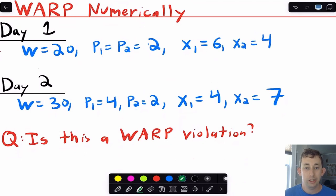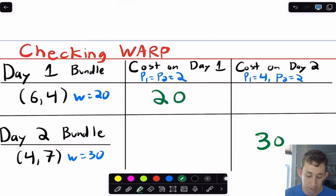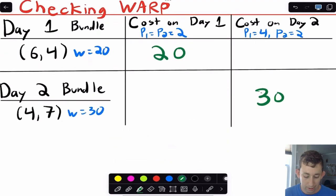So we're going to do the same thing that we just did graphically, we're just going to do it with math and with numbers. So what we're going to do is we're going to say, well, on day one, the cost of my bundle that I got on day one was 20 bucks. And if I were to compute the cost of that on day two, where the price of one is four and the price of two is two, then I'm going to be spending $32 because that's going to be four times six is 24 plus two times four is eight. So that's $32. So notice that that is not affordable to me at my original wealth. And so if I look at day two,